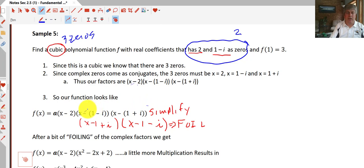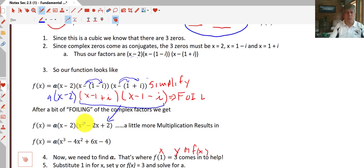Well, we have to simplify these. I'm going to distribute that negative through, apply that fraught with peril, if you will. So I get a times x minus 2 times x minus 1 plus i times x minus 1 minus i. Well, I'm going to foil all this that's in red, and that's going to give us the trinomial x squared minus 2x plus 2. So I have to do a little more foiling now, right? For lack of a better word, I have to multiply x minus 2 times my trinomial. I do all that foiling, and we get a times x cubed minus 4x squared plus 6x minus 4.